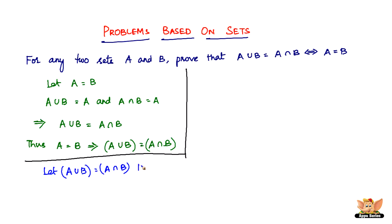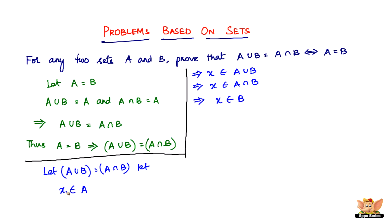For this, let us assume that X belongs to A — that means X is an element of A. So if X belongs to A, it implies that X also belongs to A union B, and eventually it implies that X belongs to A intersection B as well, because we've taken A union B equal to A intersection B. Therefore, if X belongs to A union B, it also belongs to A intersection B, and if it belongs to both, then it definitely belongs to B as well.